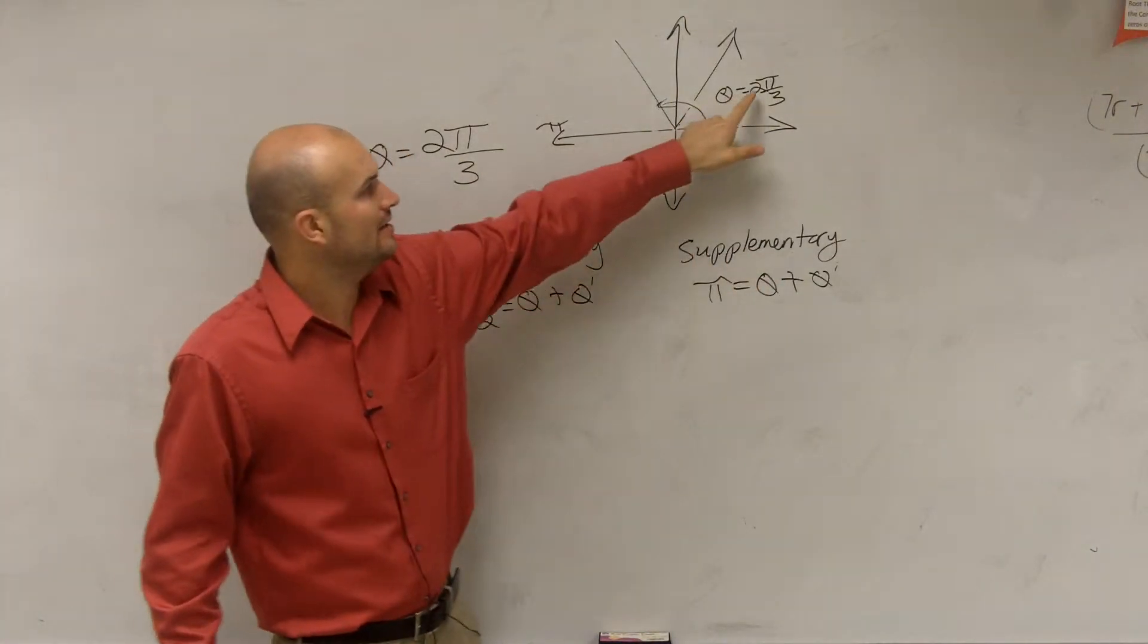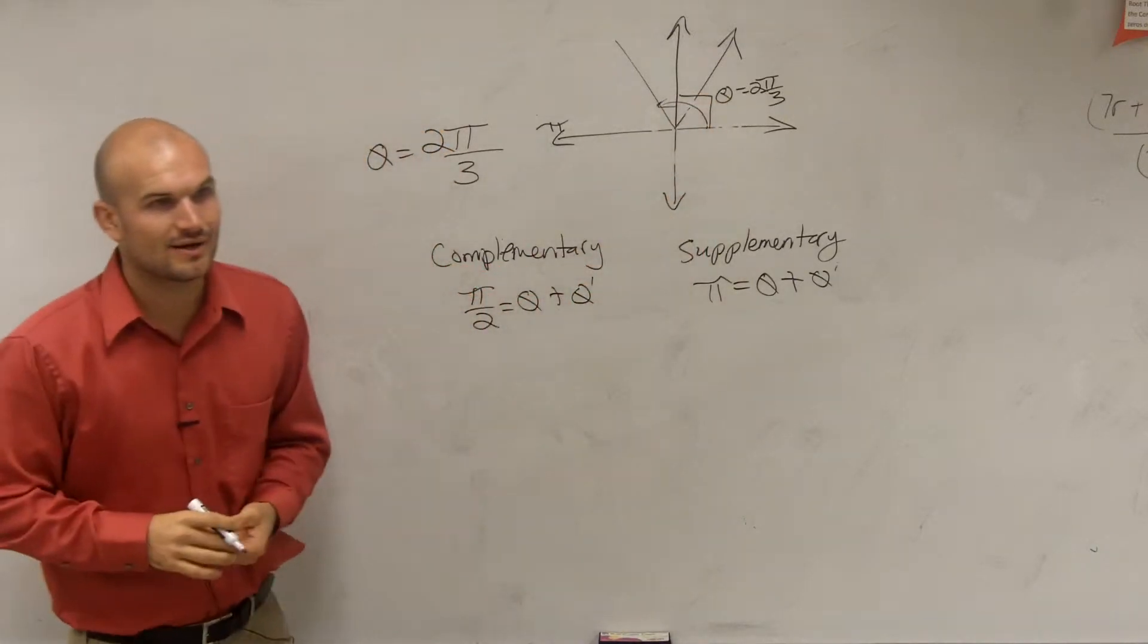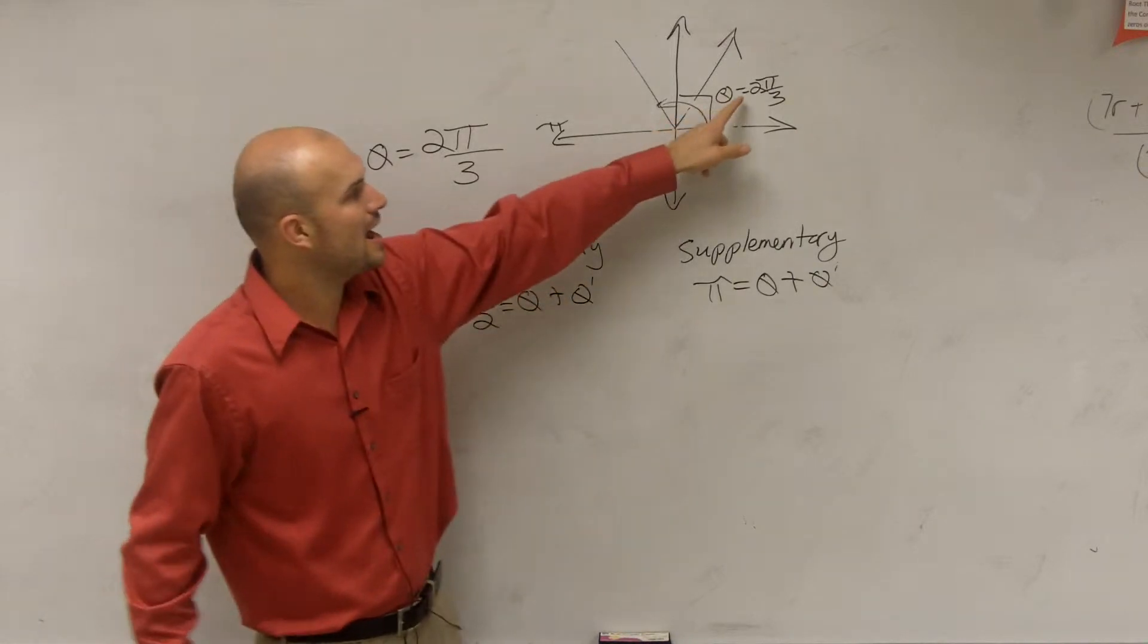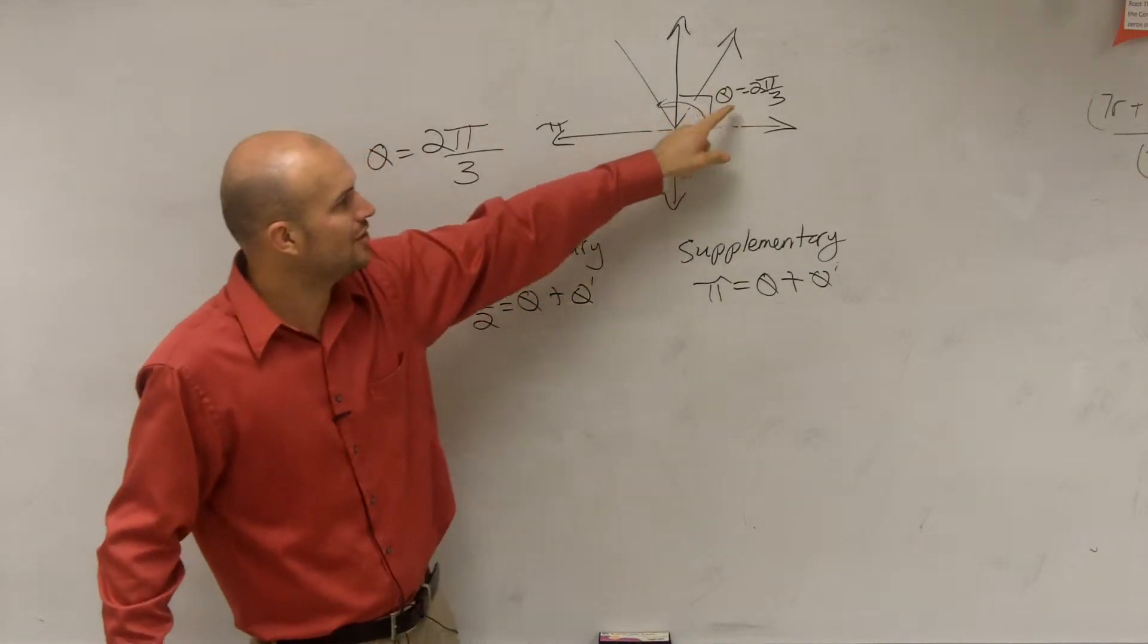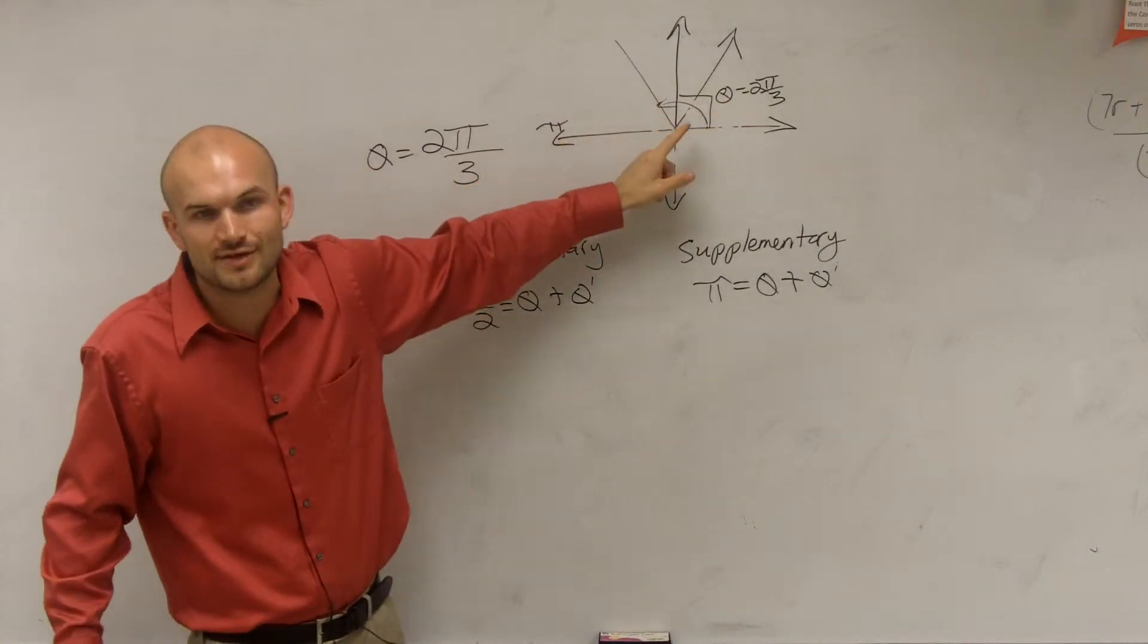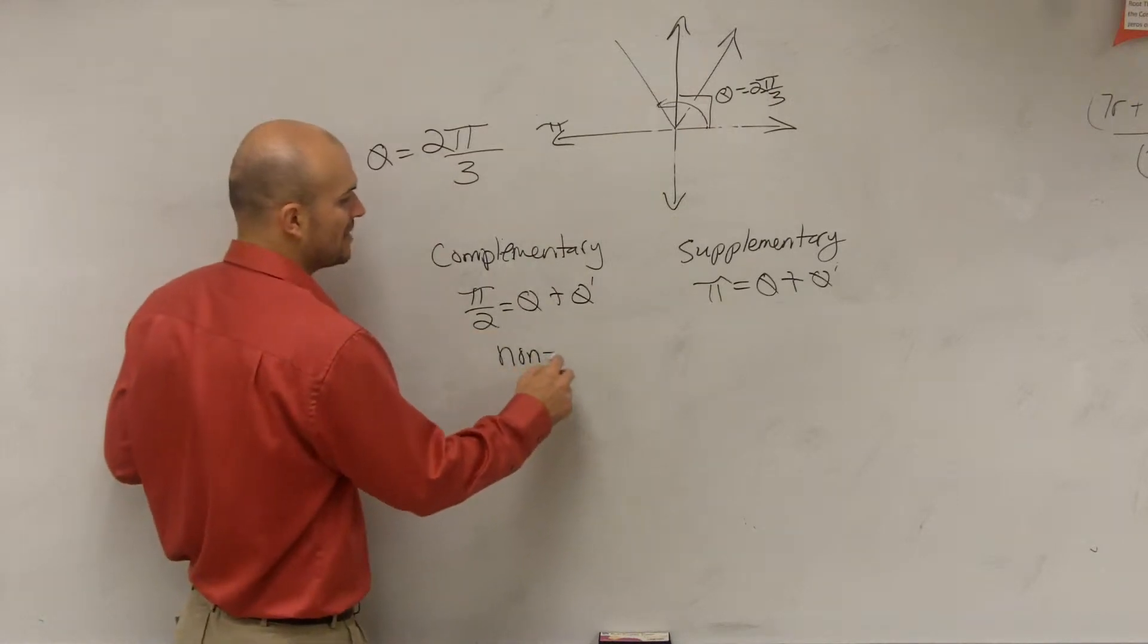Now, π over 2 is that angle right there, our 90 degree kind of angle. So if you have an angle plus another angle adds up to π over 2, well my angle's already greater than π over 2. Therefore, I do not have a complementary angle.